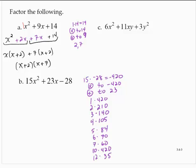I notice that 12 and 35 have a difference of 23. Since it's a positive 23, I would need negative 12 and positive 35. Using those to split up the middle term, I'd have 15x squared minus 12x plus 35x minus 28.